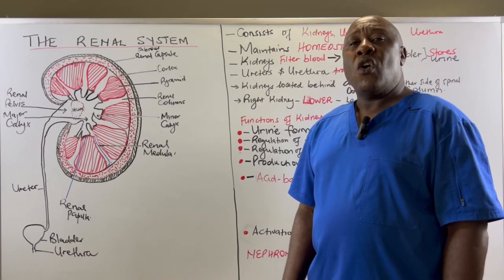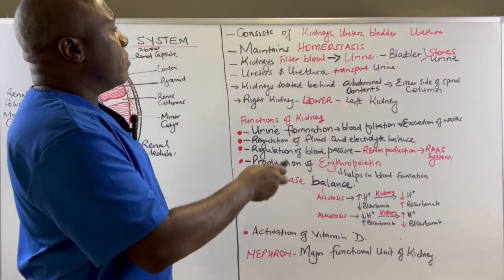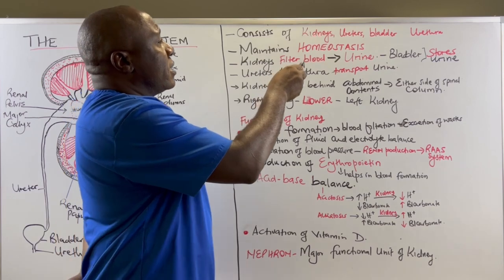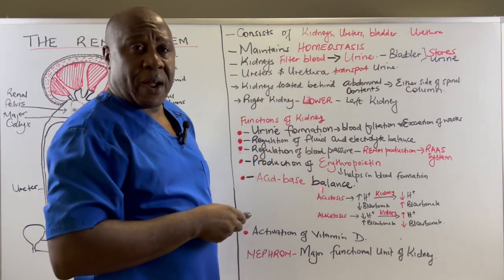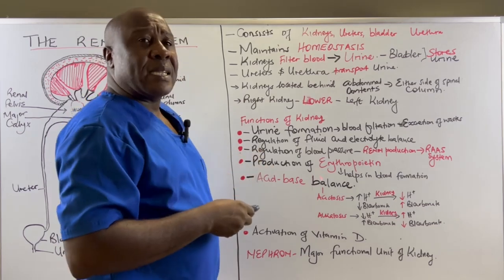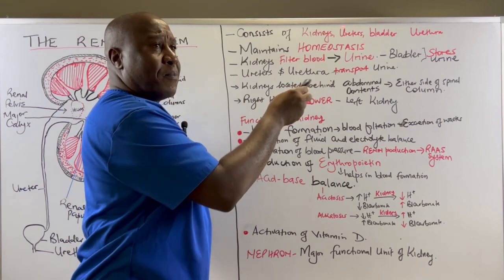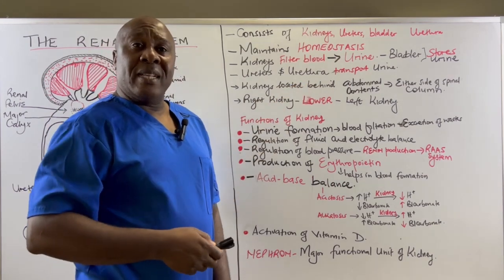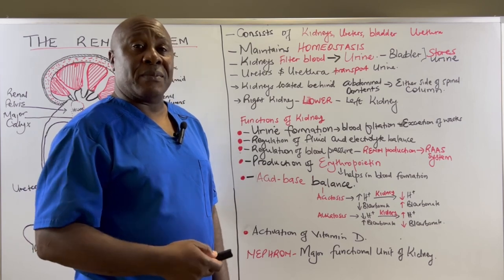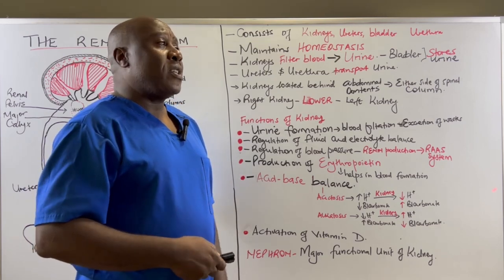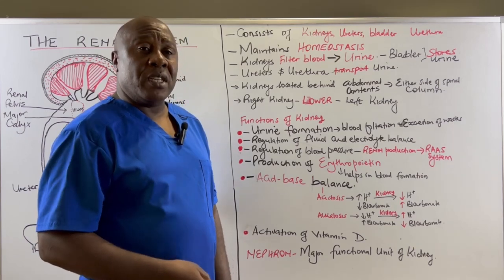So let us see what are the main players in this system. The renal system consists of the kidneys, the ureters, the bladder, and the urethra. These systems help in the maintenance of what we call homeostasis. Homeostasis is a state of balance that is required in various systems in our bodies, and this ensures our survival and the normal functioning of our bodies.